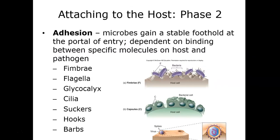Once the pathogen has entered the body through a portal of entry, it has to attach to the host and colonize. That adhesion — the binding to specific molecules between the pathogen and the host — occurs through mechanisms like the bristle-like projections of fimbriae, flagella (the tail-like mechanism that moves bacteria), the glycocalyx or slime coating, capsules, cilia, and in the case of parasitic worms, suckers, hooks, and barbs almost like little nails used to attach. Viruses use spikes on the outside of their membrane to attach to the host cell membrane.